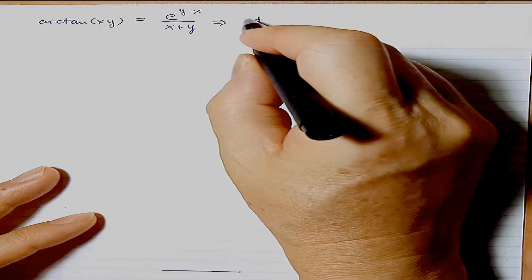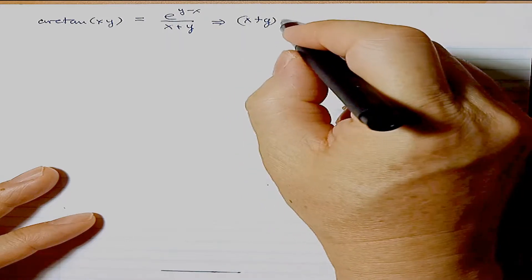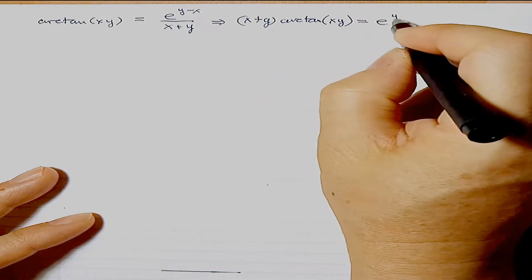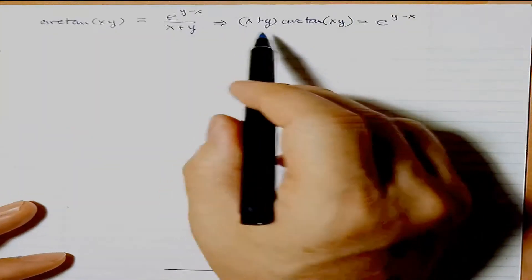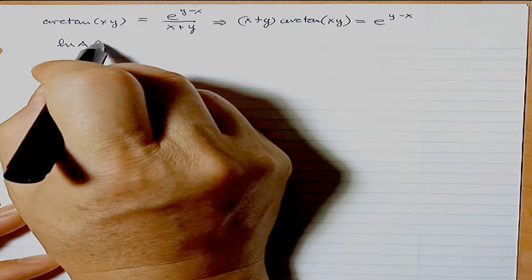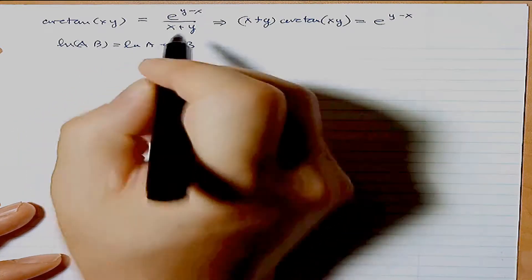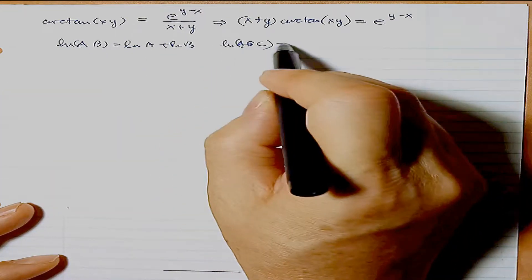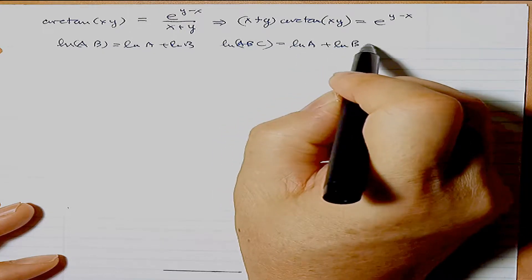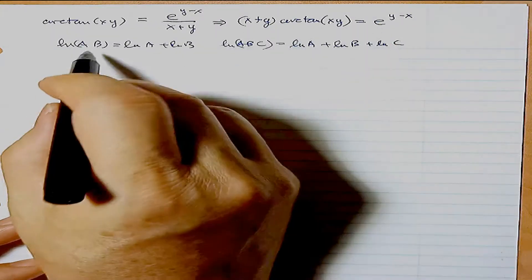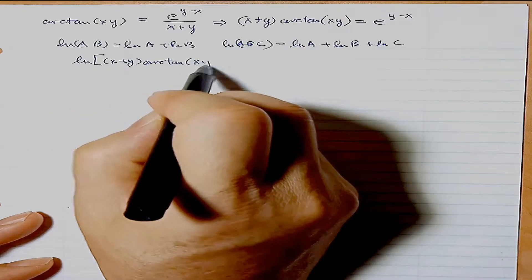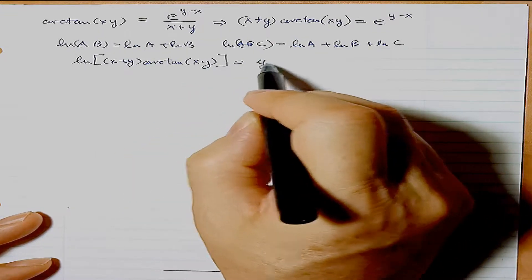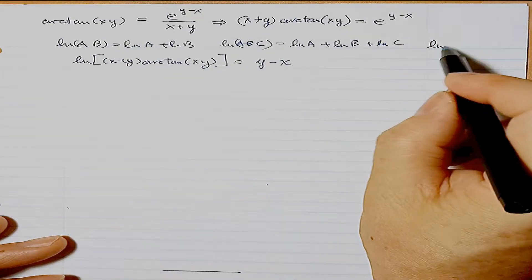Best to rewrite this as (x+y) times arctan(xy) = e^(y-x). What might be even easier is to take the log of both sides to bring things down. Remember, log(ab) = log(a) + log(b), and log(abc) = log(a) + log(b) + log(c). So taking log of both sides gives log(x+y) + log(arctan(xy)) = (y-x) times log(e), which equals y - x, since log(e) = 1.